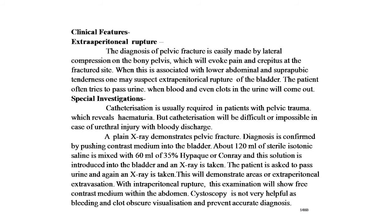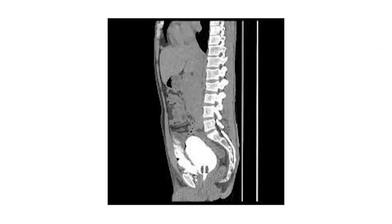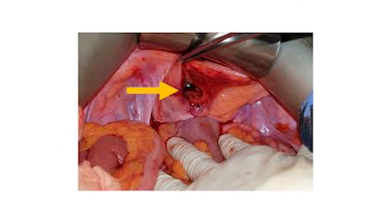Diagnosis is confirmed by contrast cystography: approximately 120 ml of sterile isotonic saline is mixed with 60 ml of 35% Hypaque contrast and introduced into the bladder. An X-ray is taken, the patient is asked to void, and a post-void X-ray is taken. This demonstrates the area of extraperitoneal extravasation. With intraperitoneal rupture, it will show free contrast medium within the abdomen. Cystoscopy is not very helpful as bleeding and clots obscure visualization. Here is a picture of extraperitoneal bladder injury with extravasation clearly seen on MRI.